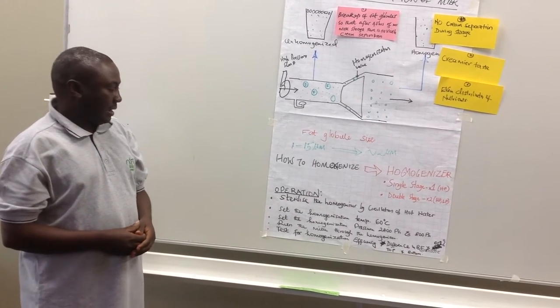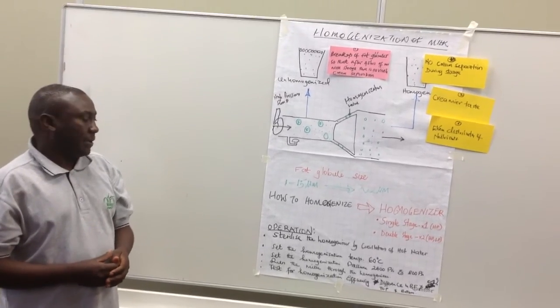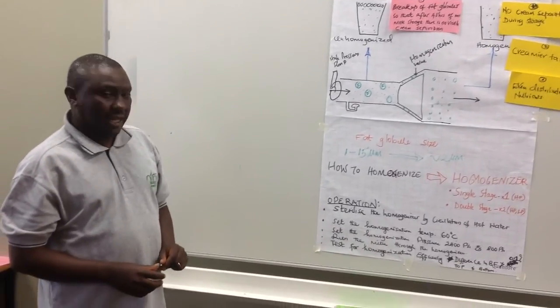There are five steps. The first step is to sterilize the homogenizer by circulation of hot water.